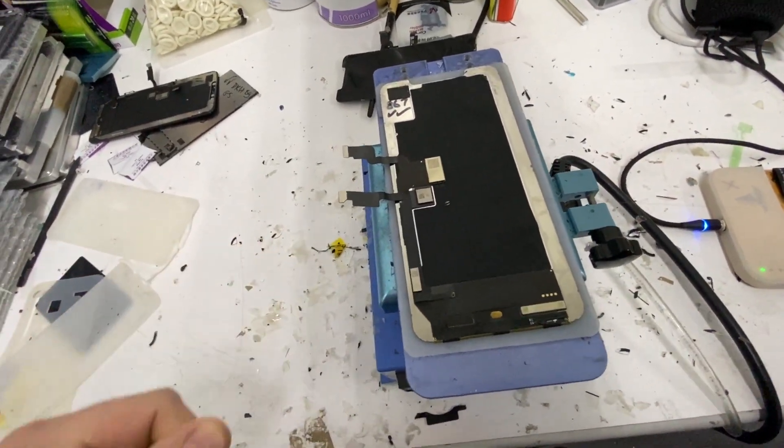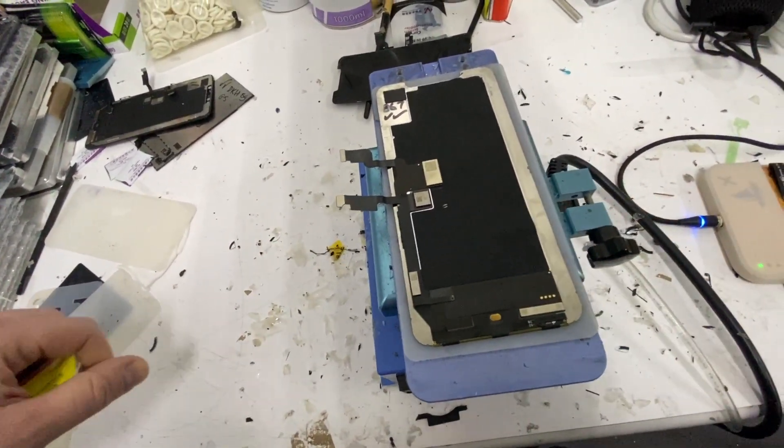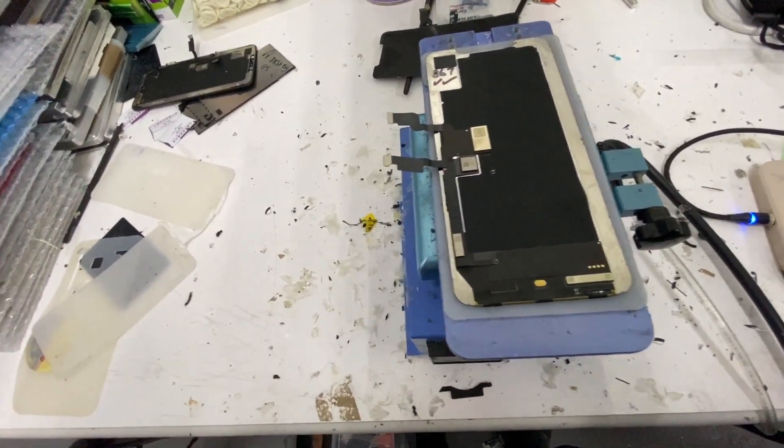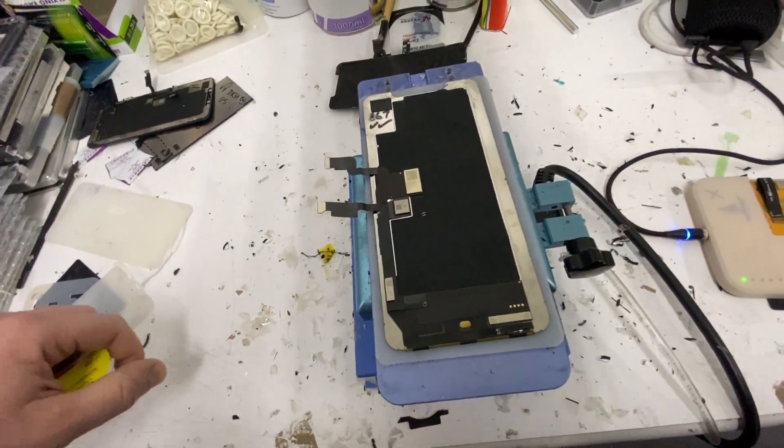Now the polariser layer that's underneath the touch panel, that's quite sturdy. It's hard to mark that to the point where you'll see it after the new digitiser and glass one.